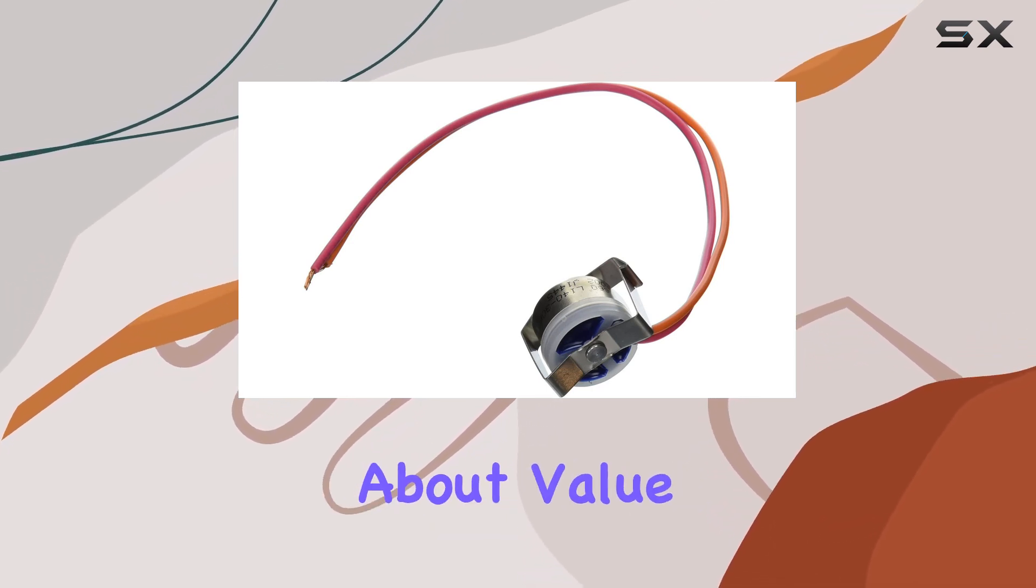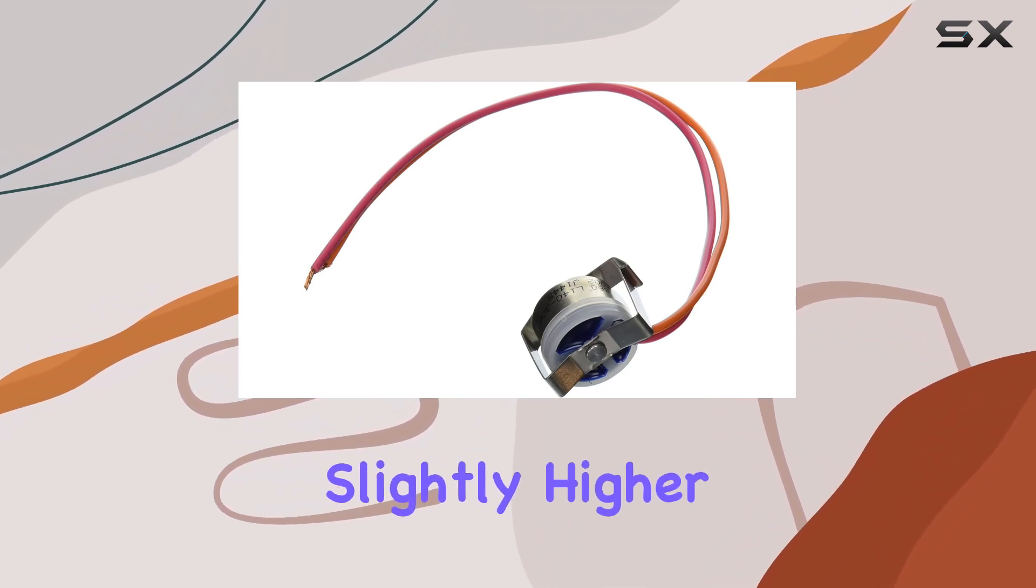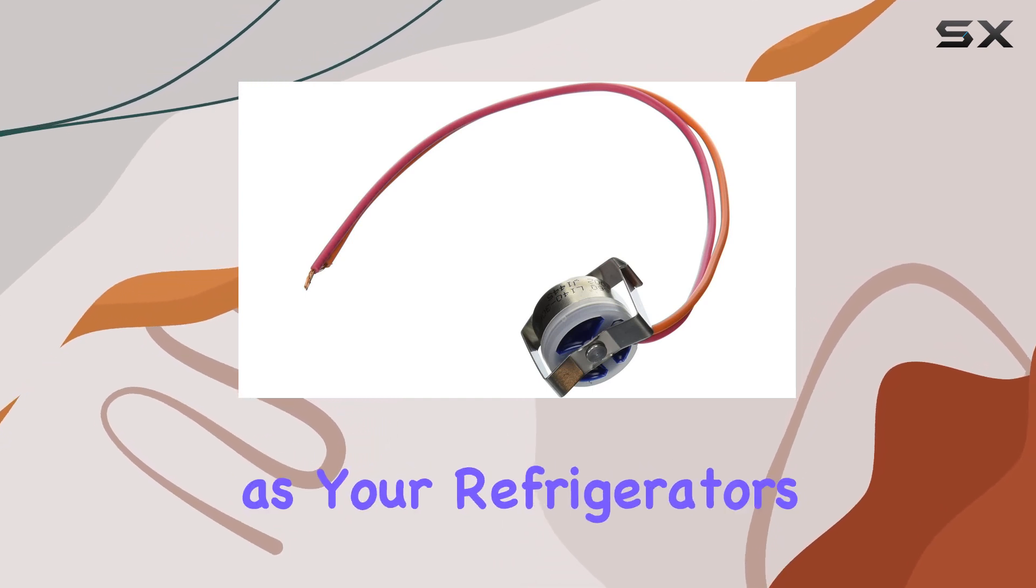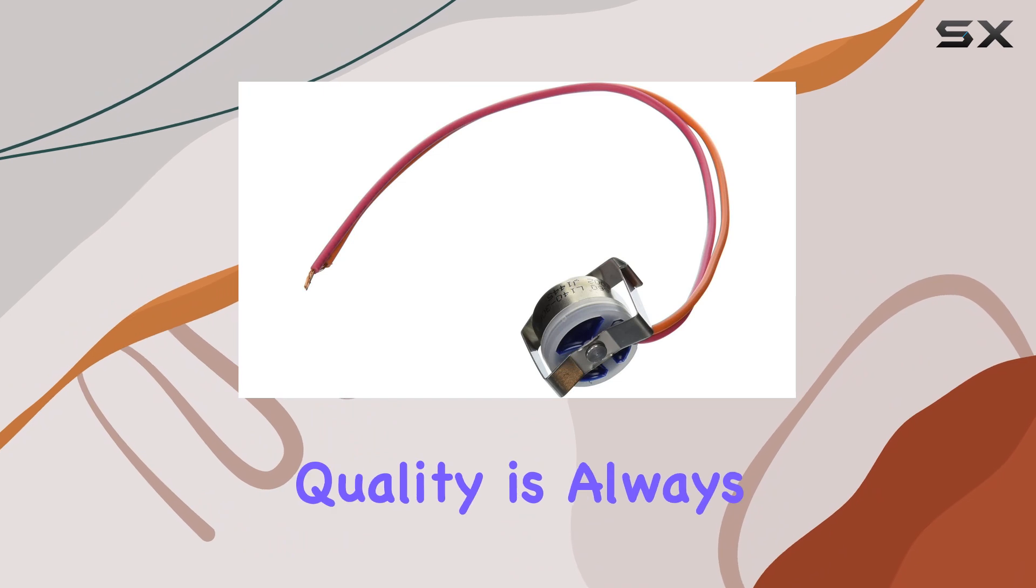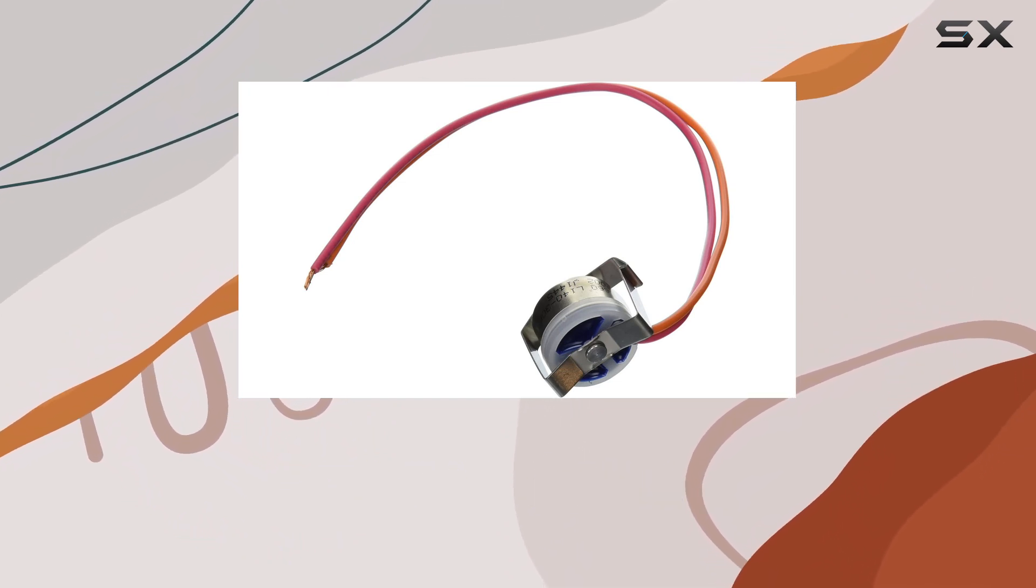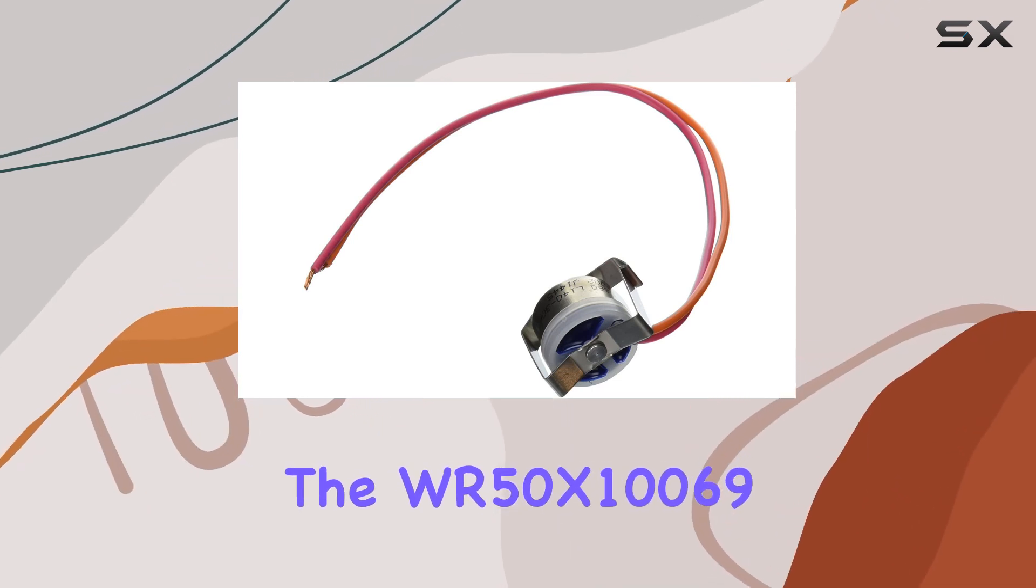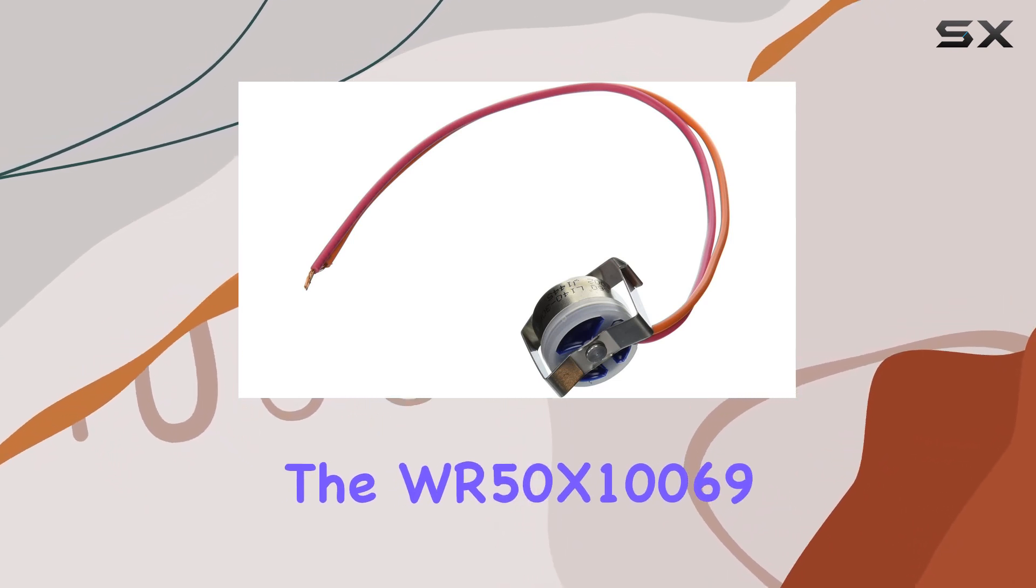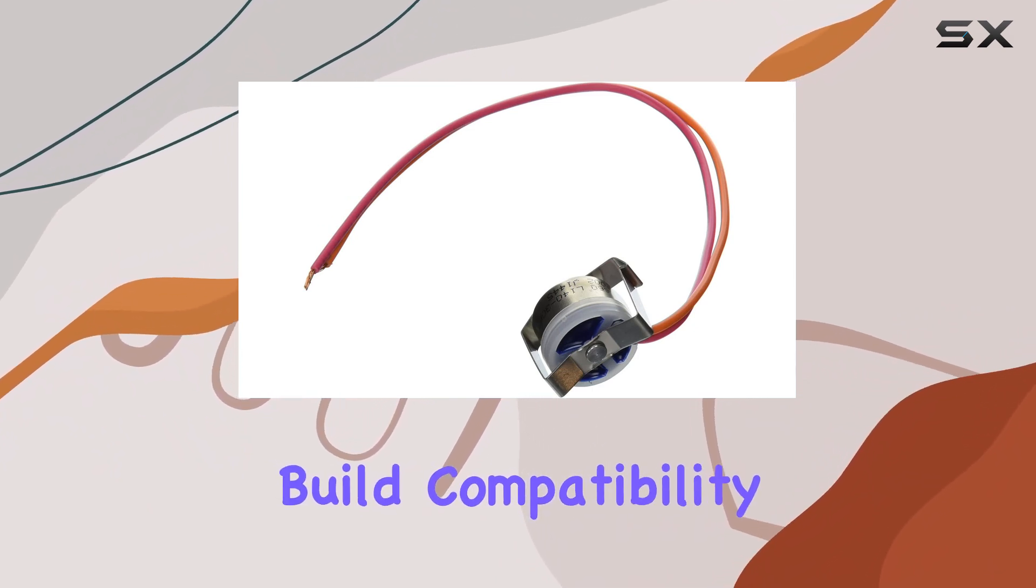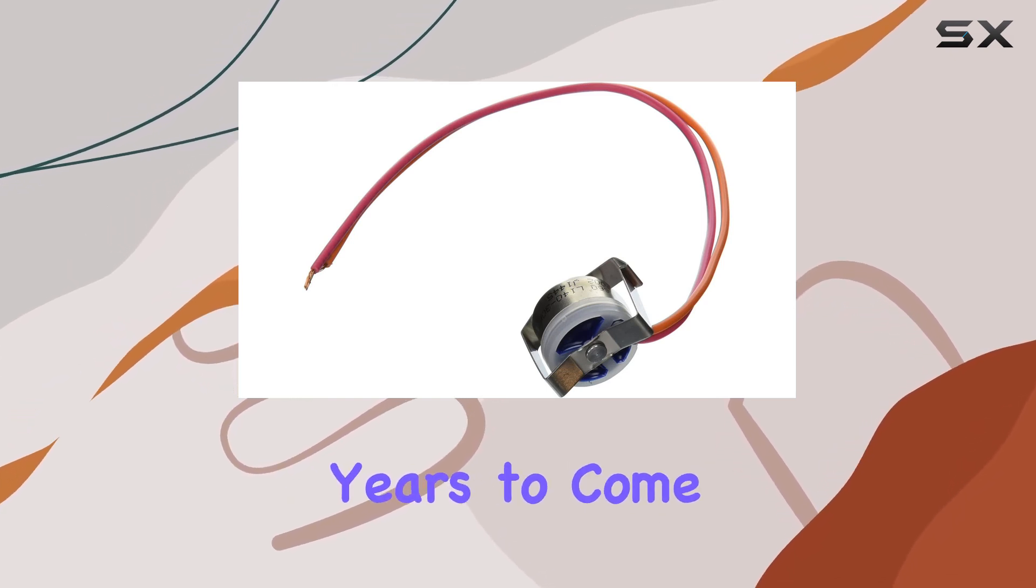Now, let's talk about value. Sure, genuine replacement parts might come with a slightly higher price tag compared to aftermarket alternatives. But when it comes to something as critical as your refrigerator's performance, investing in quality is always worth it in the long run. Overall, if you're in need of a replacement defrost thermostat for your GE refrigerator, the WR50X10069 is definitely worth considering. Its genuine build, compatibility, and performance make it a solid choice for ensuring your fridge stays in top condition for years to come.